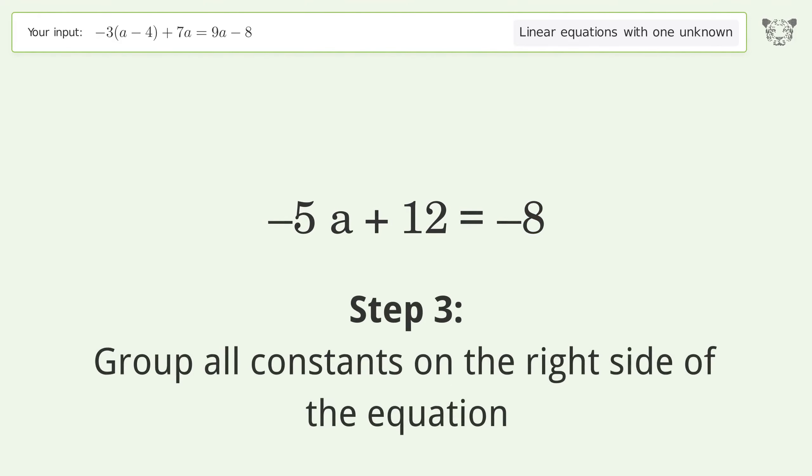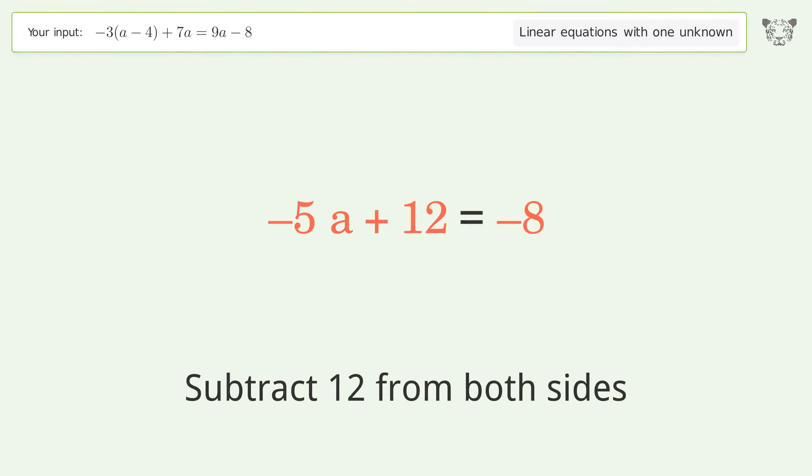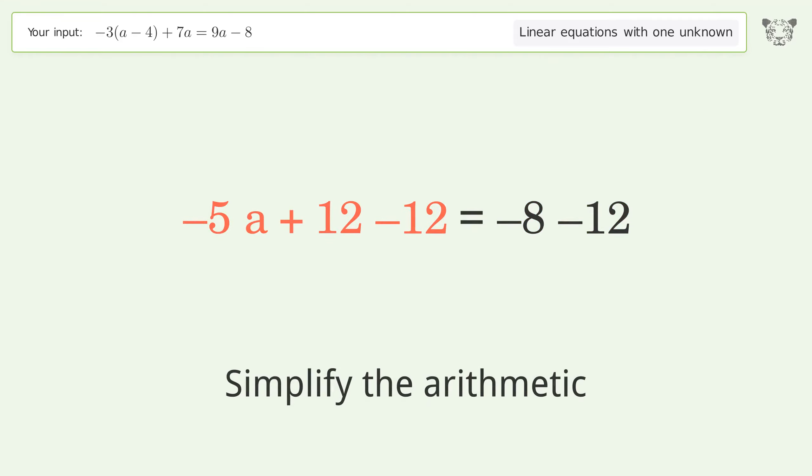Group all constants on the right side of the equation. Subtract 12 from both sides. Simplify the arithmetic.